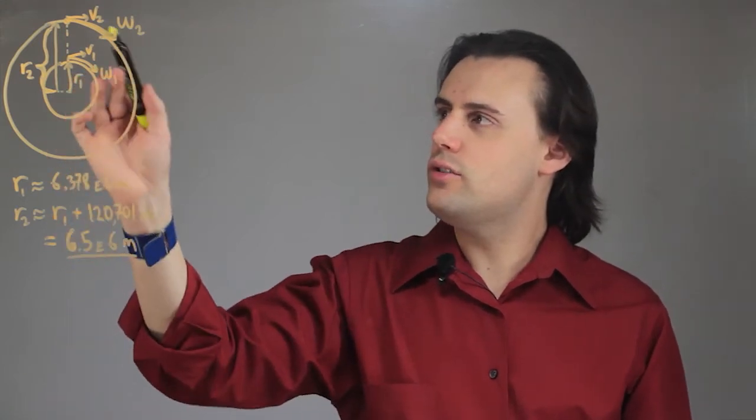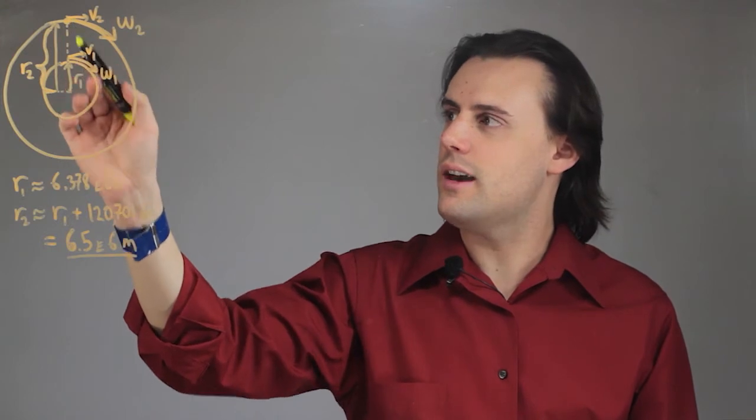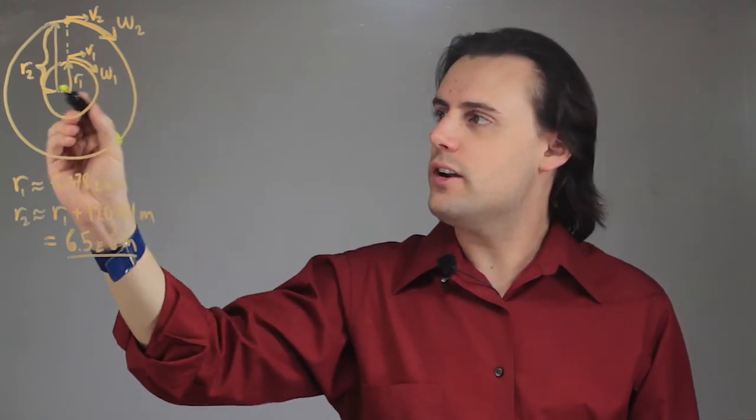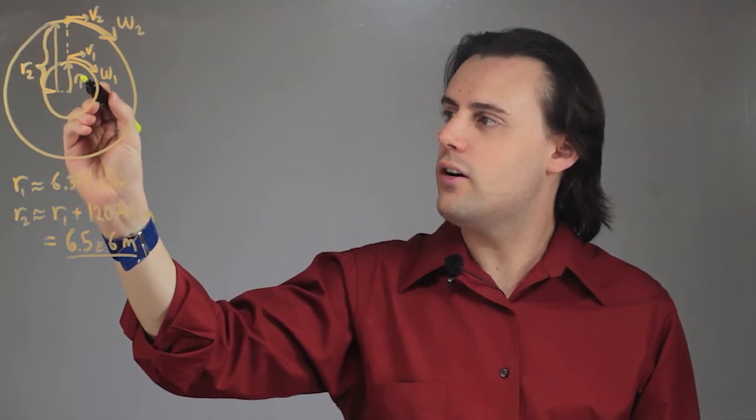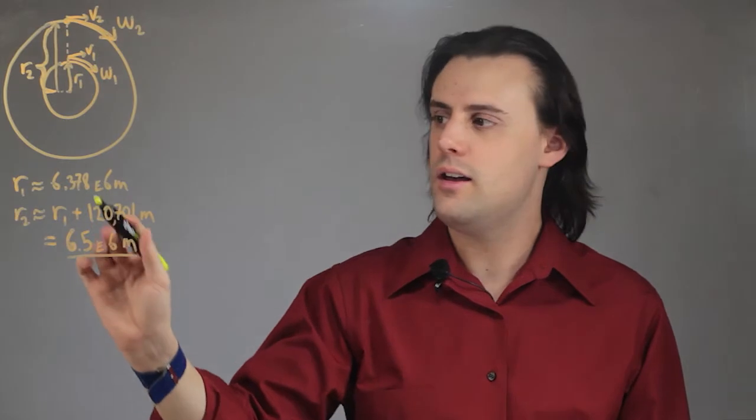Usually we refer to these stationary satellites as satellites that we put up that orbit the Earth. So if this is the Earth here with radius r1 approximately equal to 6.378 million meters,